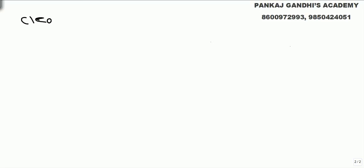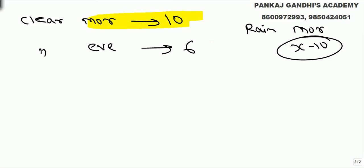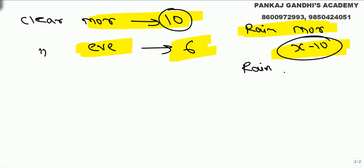They had a total of ten clear mornings and six clear evenings. So out of x total mornings, ten were clear, meaning it rained on x minus 10 mornings. They had six clear evenings, so it rained on x minus 6 evenings.